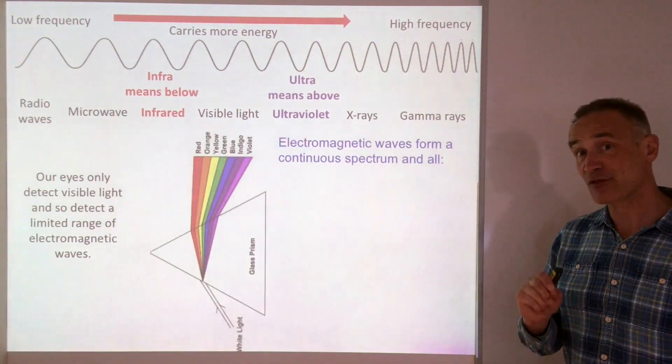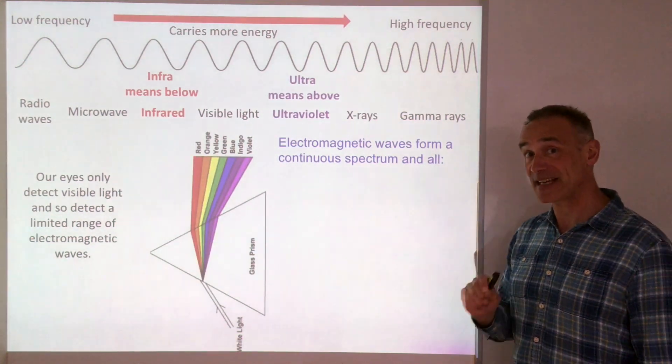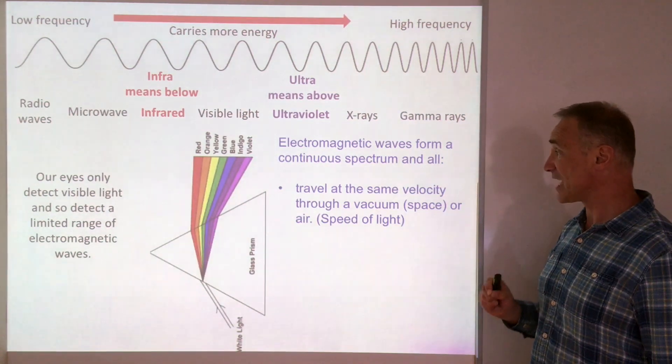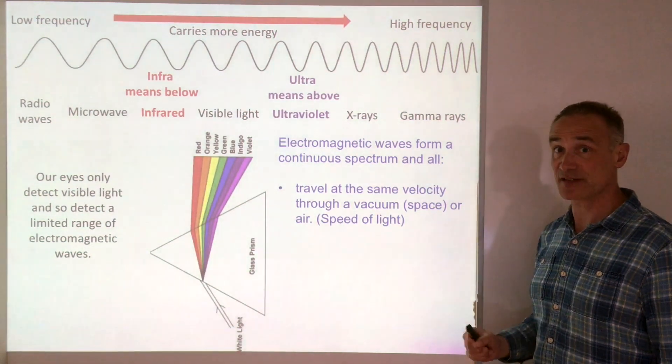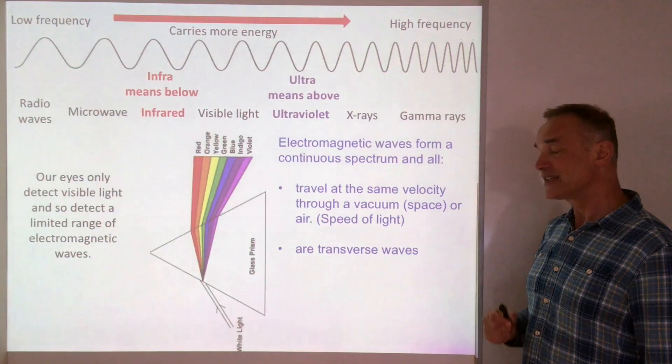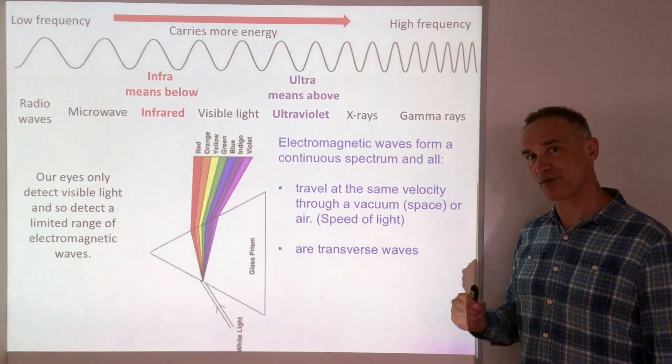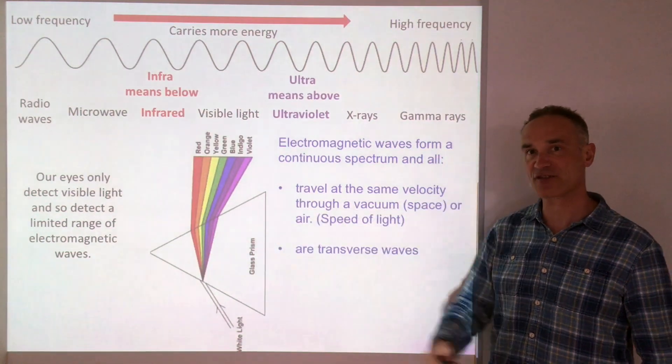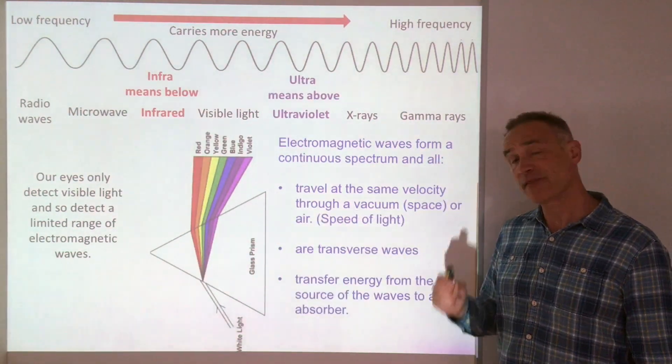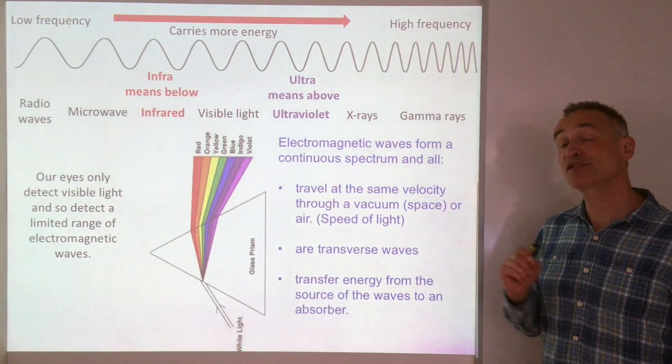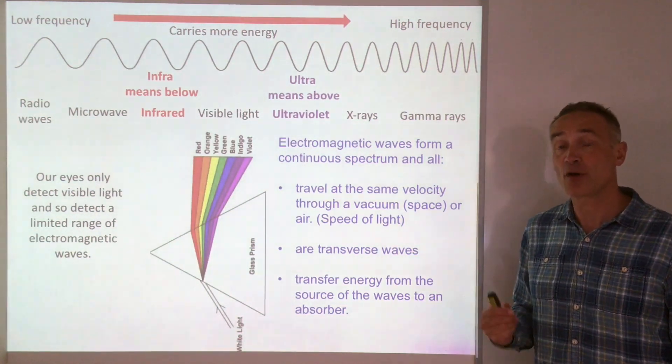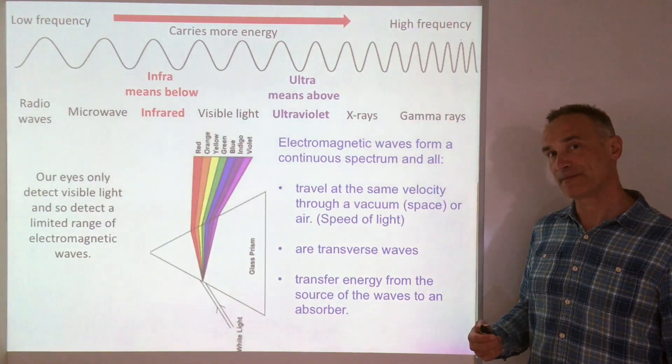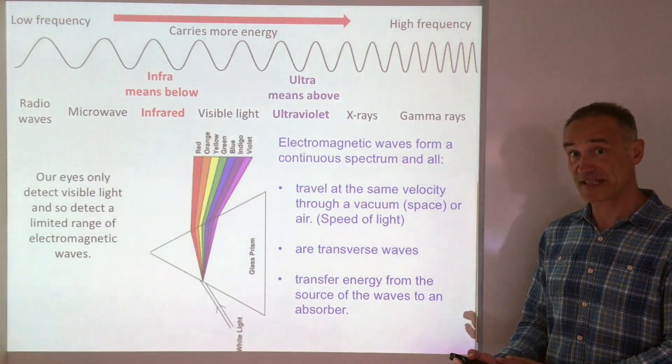All electromagnetic waves have some key things in common that you need to know. First of all, they all travel at the same speed through a vacuum, that's the speed of light. Secondly, they're transverse waves. Remember they oscillate at right angles to the direction in which they're traveling. And finally, they all transfer energy from the source, like a light bulb or a heater or a mobile phone, to the absorber, like your eyes or your skin.